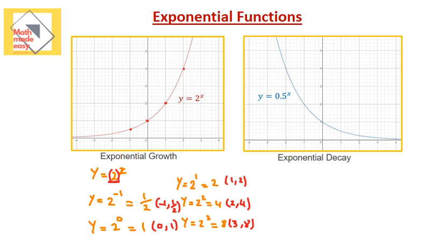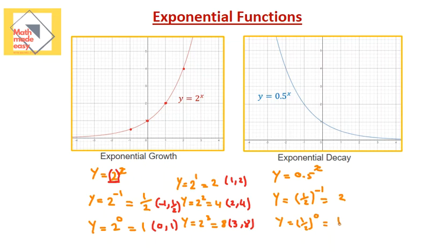Now, if I have an exponential decay, what do we mean by that? The values I have is half to the power of x. I'm going to substitute with the same values of x I did for the other function. If I have half to the power of negative 1, the fraction will flip, so the answer will be 2. Then if I have half to the power of 0, my answer is going to be 1. When I have half to the power of 1, my answer is going to be half. Then when we have half to the power of 2, it's going to be 1 squared over 2 squared, which is 1 over 4.